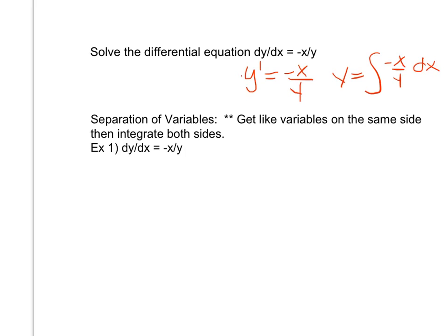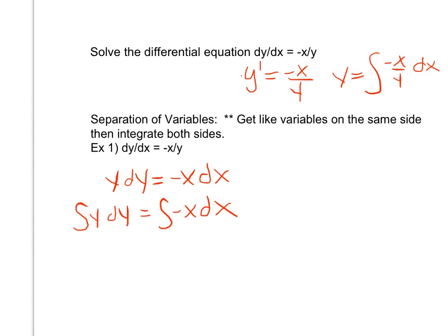That's why we have to have this idea of separation of variables. Separation of variables is a way to get variables on the same side, and then rather than trying to integrate with two different variables, we'll just integrate both sides of our equation. Going back to dy/dx equals negative x over y, I'll get like variables on the same side by cross-multiplying, giving me y dy equals negative x dx.